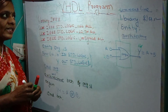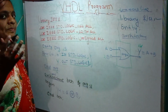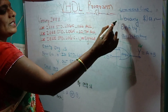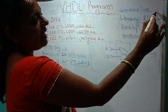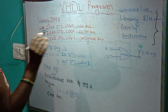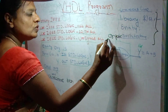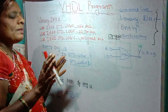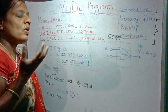Hello students, today let us learn how to write the VHDL program. In the last videos we studied all the basic points about VHDL and its structure — the structure begins with the library files, entity, and architecture. Today let us start writing the VHDL program for the OR gate.